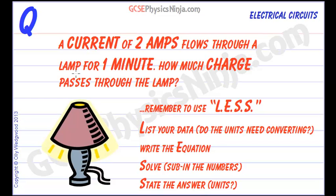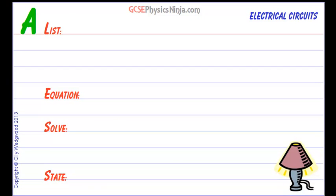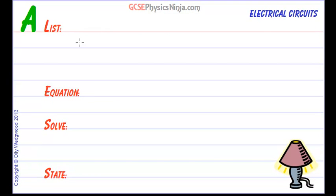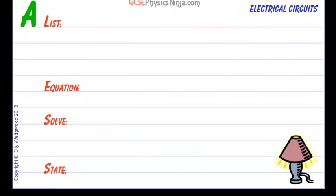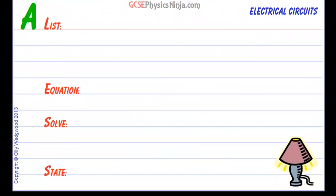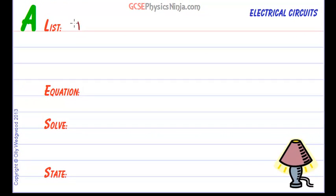So we have 2 amps through a lamp for one minute and we need to find the charge. Let's do a list of data which will guide us as to what equation to use. First off, we've got a current of 2 amps. The symbol for current is I, capital I equals 2 amps.